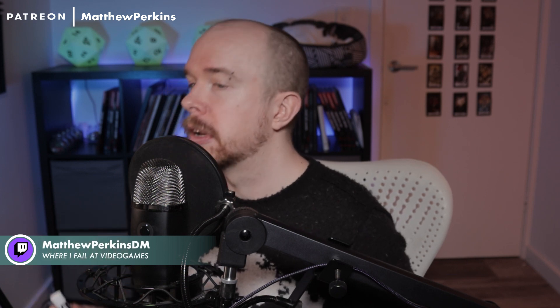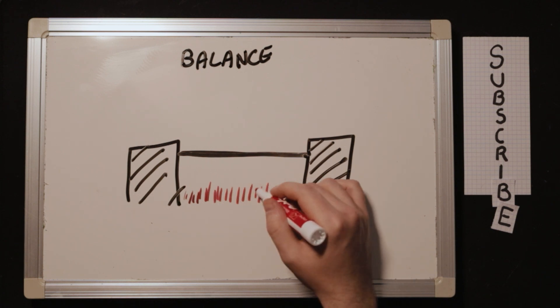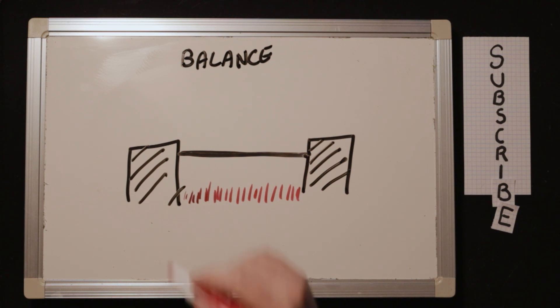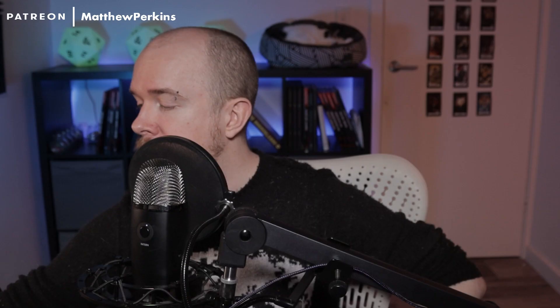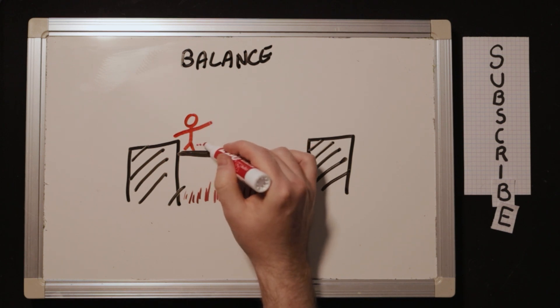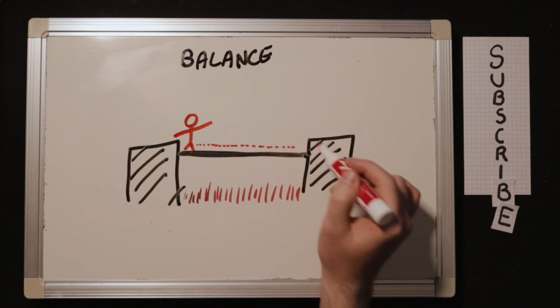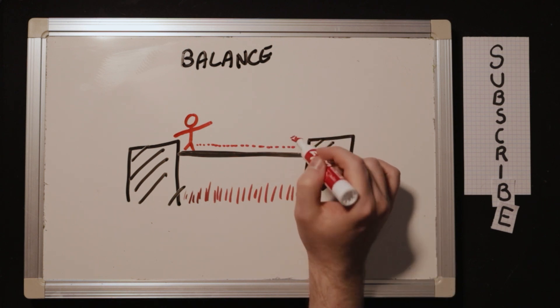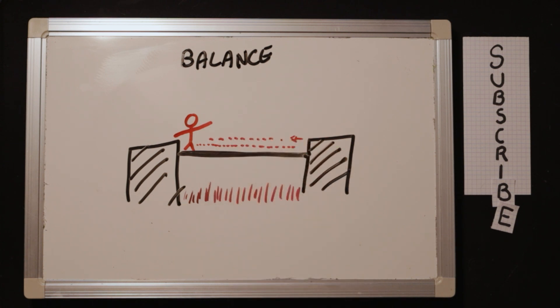But before we get into the strategies to deal with specific scenarios with overpowered characters, I want to talk about an important concept here that's going to help frame your understanding of being overpowered. And that is balance in Dungeons & Dragons. So I want you to imagine two buildings with a tightrope between them. The first guy walks across and he's got the big pole, and he's super balanced. He doesn't even shudder at all. He just walks all the way across, perfectly balanced, perfectly centered. People would say, dude, that guy has perfect balance.